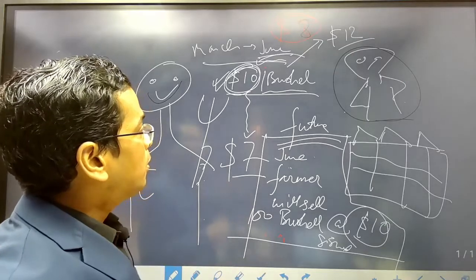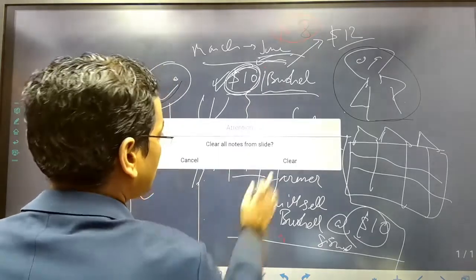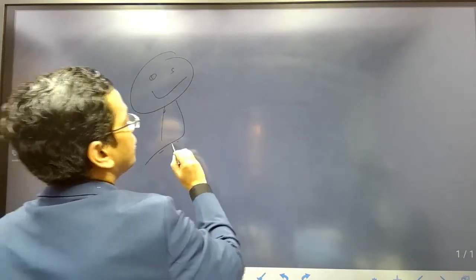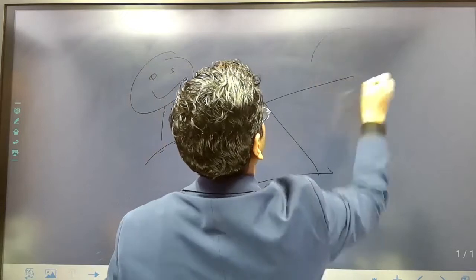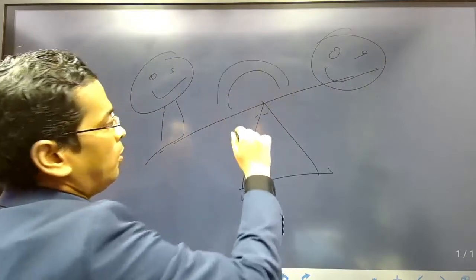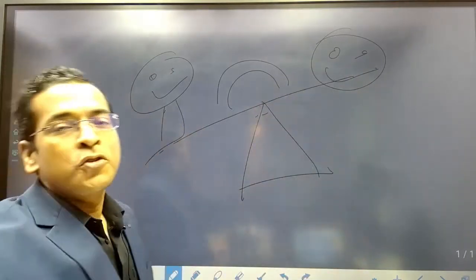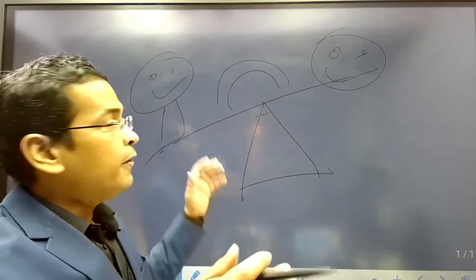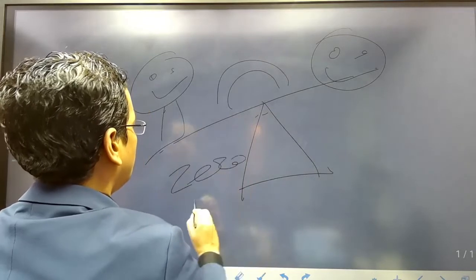It is a zero-sum game. It looks like a seesaw, with the farmer on one side and the industry on the other: when one side is down, the other is up. If prices go one way, one gains and the other loses. Ultimately, if we add the gain or loss of both parties together, it will be zero. That is why it is called a zero-sum game.